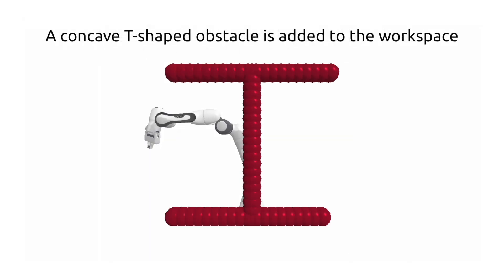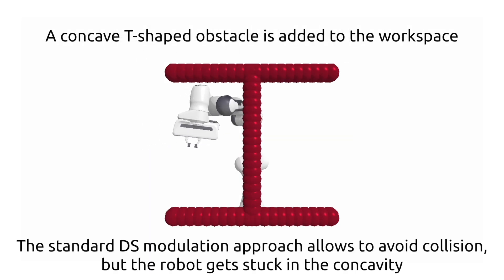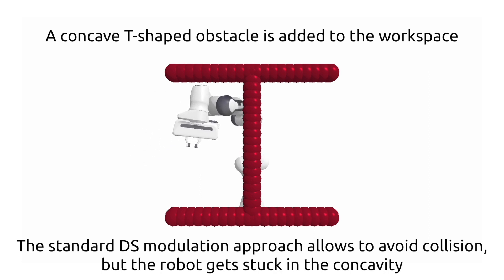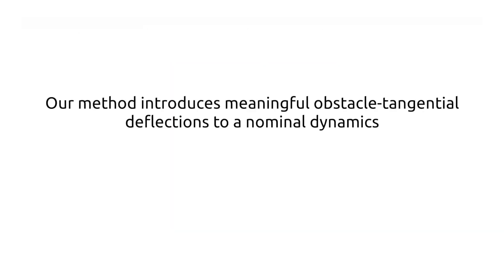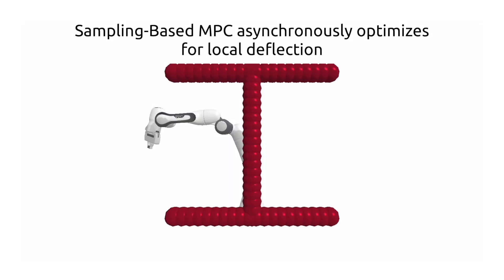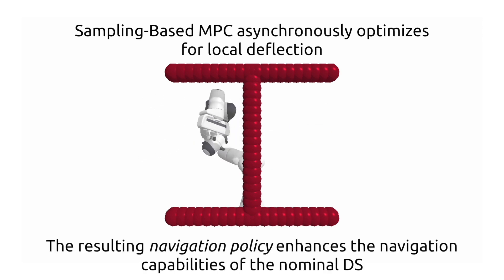Consider the following obstacle shape in front of the robot. The standard modulation approach falls into local minima, preventing the robot from reaching the goal. Our method introduces meaningful obstacle tangential deflections that are activated locally near concave obstacles. As a result the robot is capable of overcoming the complex shape and reaching the goal.